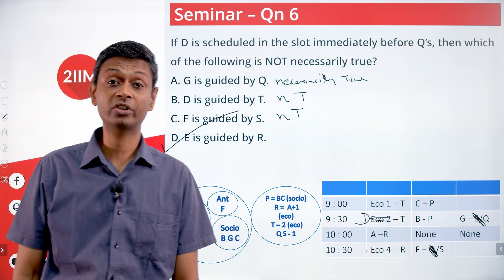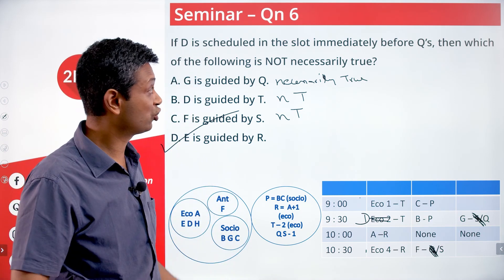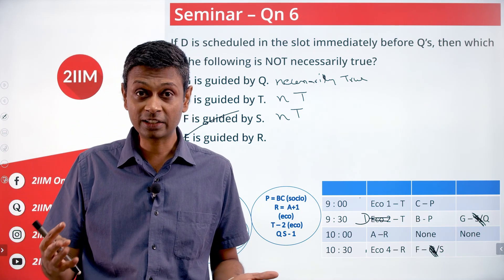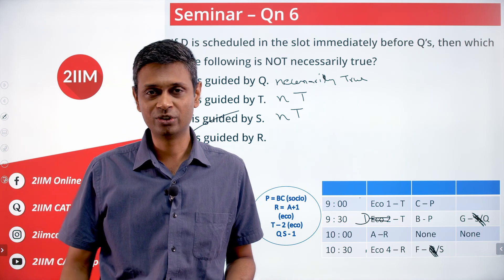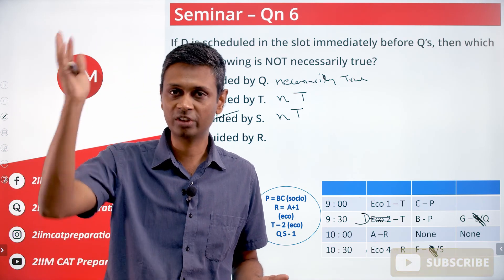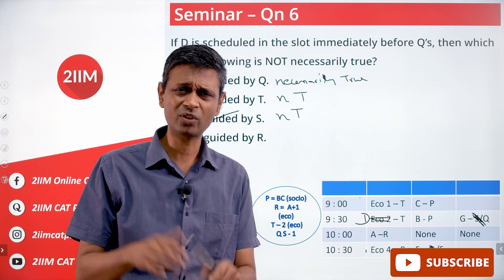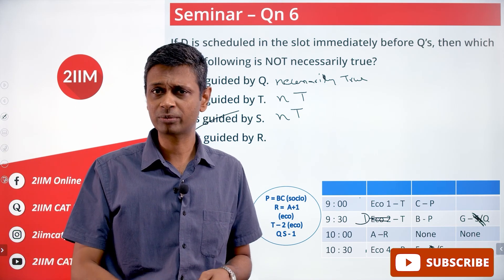Once you get that overall grid, the set becomes easy — it should be the set to attack, because it has six questions and they are not that difficult once you go past the initial setup. There are several variants, but once you have the framework, the variants take care of themselves.